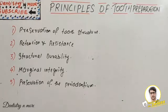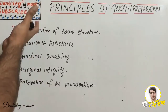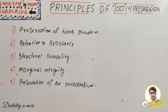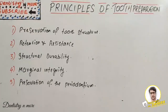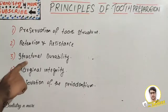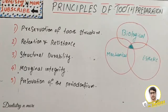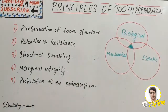Welcome back to another session in dentistry. We have the most important part of FPD — fixed partial denture — the principles of tooth preparation. This is a very important question, asked every two years as an essay or short note, so you cannot skip this chapter. Tooth preparation has basically five principles: preservation of tooth structure, retention and resistance form, structural durability, marginal integrity, and preservation of the periodontium. We can also classify requirements into three broad categories: biological, mechanical, and aesthetic.